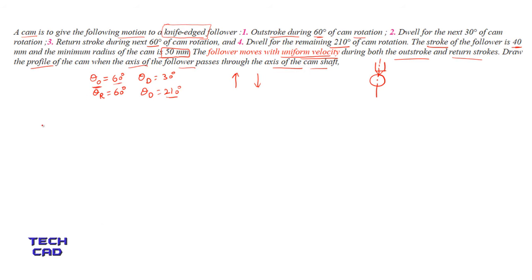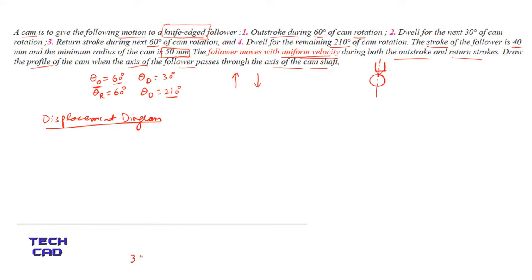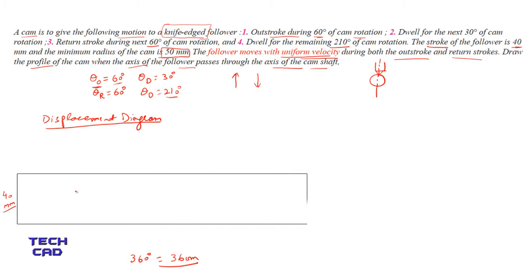Now let's start the solution. First you have to make the displacement diagram, and for that you take a scale factor converting degrees into centimeters. The 360-degree line is 36 centimeters on my scale. The forward stroke of 40 mm becomes a 4 cm line. Complete the rectangle and divide it into outstroke, dwell, and return angle: 60 degrees is 6 cm, dwell 30 degrees is 3 cm, and return stroke 60 degrees is another 6 cm.